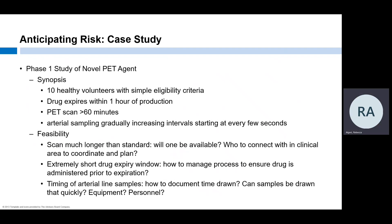We're going to revisit the case study introduced in Series 1. Our Phase 1 study of a novel PET agent will recruit 10 healthy volunteers with short and easy-to-meet inclusion criteria. Subjects will receive the investigational drug, which expires an hour after it is manufactured. The PET scan takes 60 minutes to complete. While subjects are in the scanner, arterial blood samples will need to be taken—initially collected in rapid succession every few seconds, with the interval between samples increasing as the scan continues.